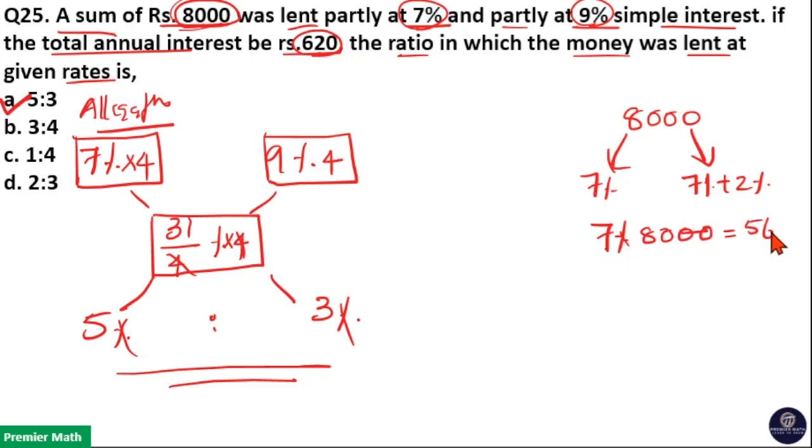7 into 80 is equal to 560. But 7 percentage of interest is equal to 560. But here annual interest is 620. So difference between 620 and 560 is equal to 60.